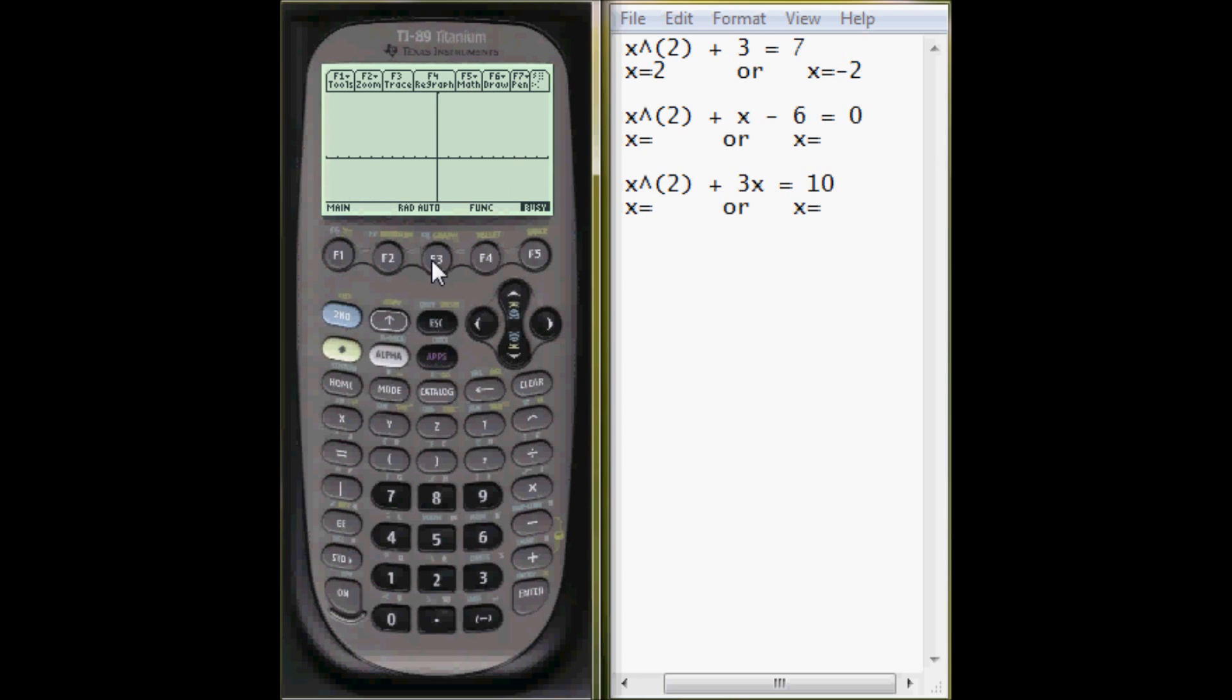So graph this. It'll say busy in the right-hand corner again. And now, once this is done, press F5. And this time, I'm going to use a zero function. So press 2. Lower bound, right where it is.